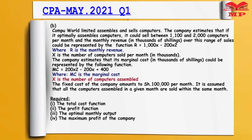The company estimates that the marginal cost, also in thousands of shillings, could be represented by the function MC equals 200x squared minus 200x plus 400, where MC is the marginal cost and x is the number of computers assembled. The fixed cost of the company amounts to 1,000,000 shillings per month. It is assumed that all the computers assembled in a given month are sold within the same month.